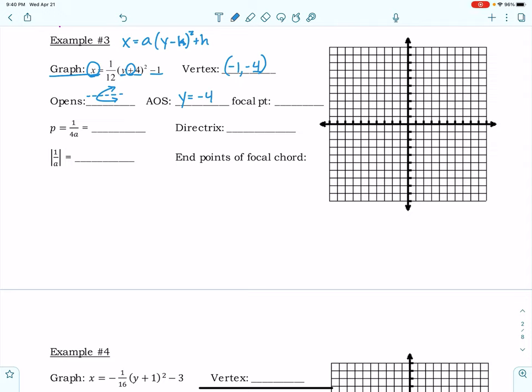Our axis of symmetry this time is going to be y equals negative 4 because y is negative 4 up here and I'm going to find p. So 1 over 4 times a which is 1 over 12. So that gives me 4 over 1 times 1 over 12. This reduces. So I've got 1 over 1/3 which gives me 3.